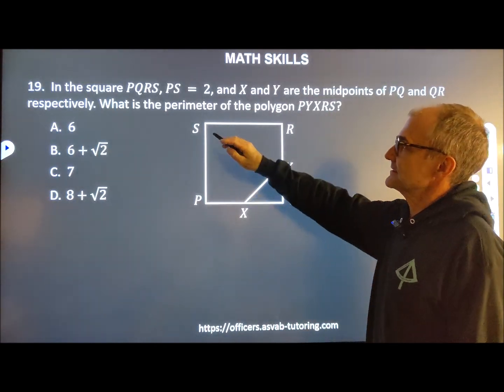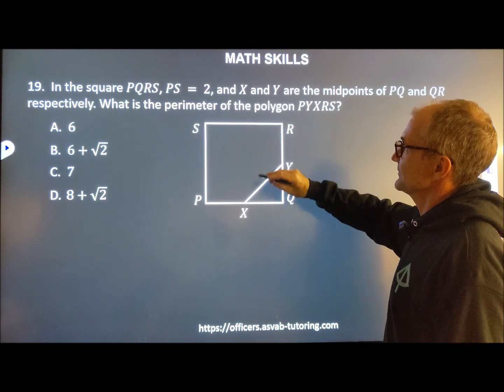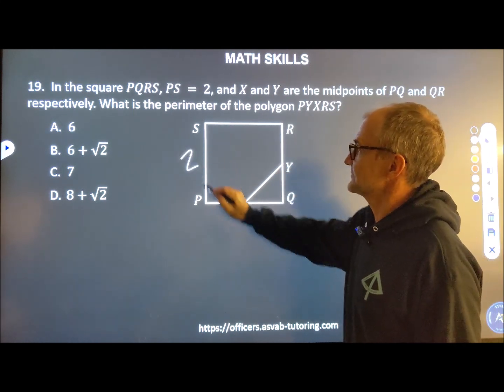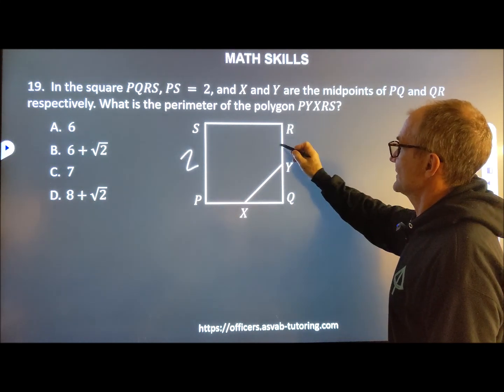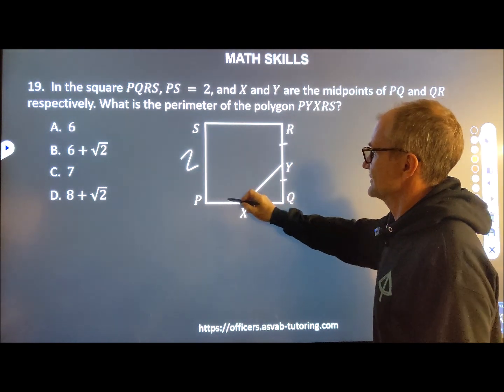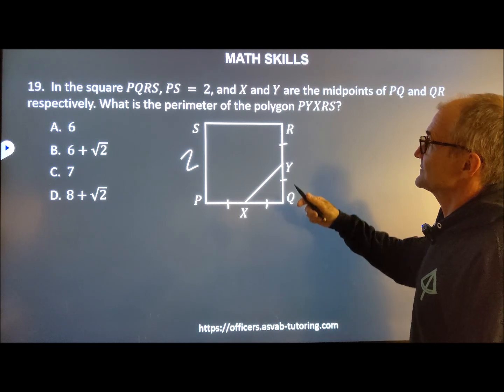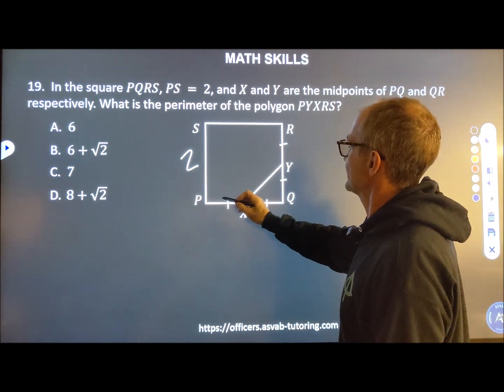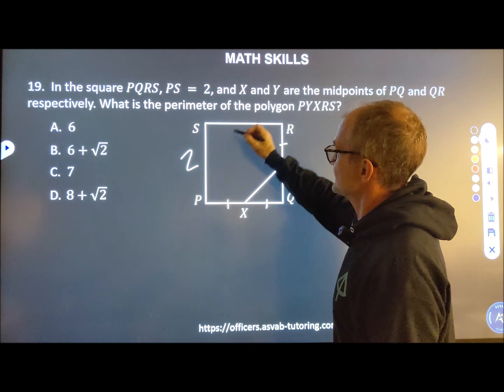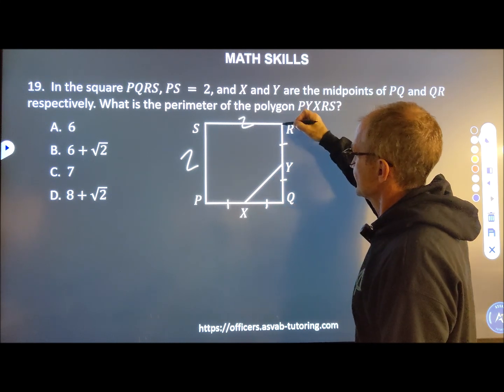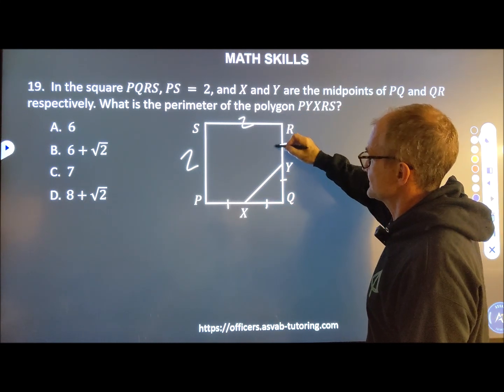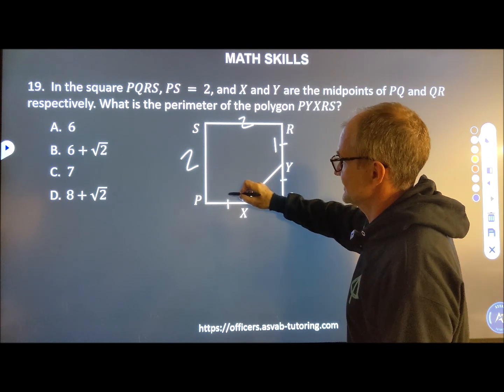Number 19, in the square PQRS, PS is 2. I'm transferring the information there. X and Y are midpoints. So these things are all congruent. What is the perimeter of the polygon? So I want to know the perimeter of this polygon here. Well, if that's 2, that's 2. This is a midpoint. So this is 1 and this is 1.